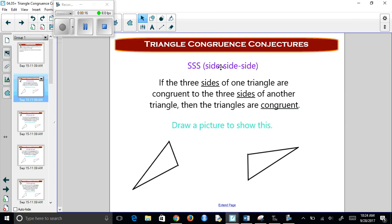So side-side-side is a congruence conjecture that works. It's saying that if all three sides correspond, so this side is congruent to this side, this side is congruent to this side, and this side is congruent to this side, then we know that the triangles are congruent, so we know that the angles are going to be congruent as well.